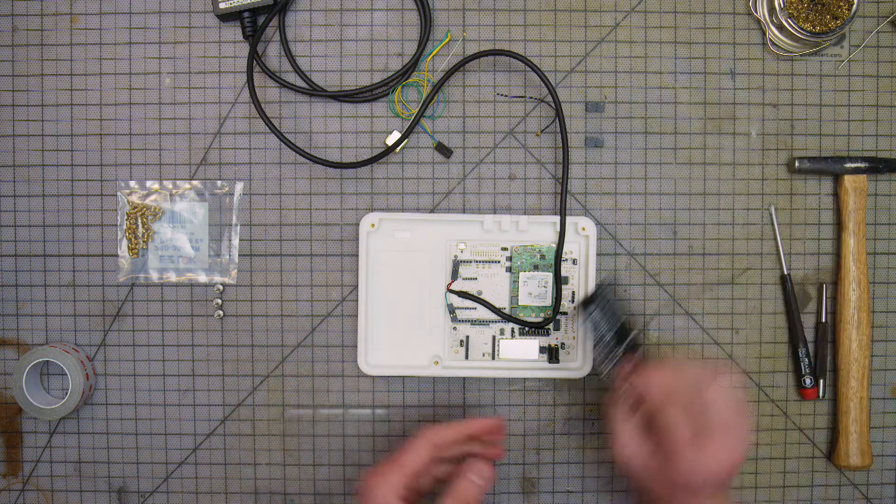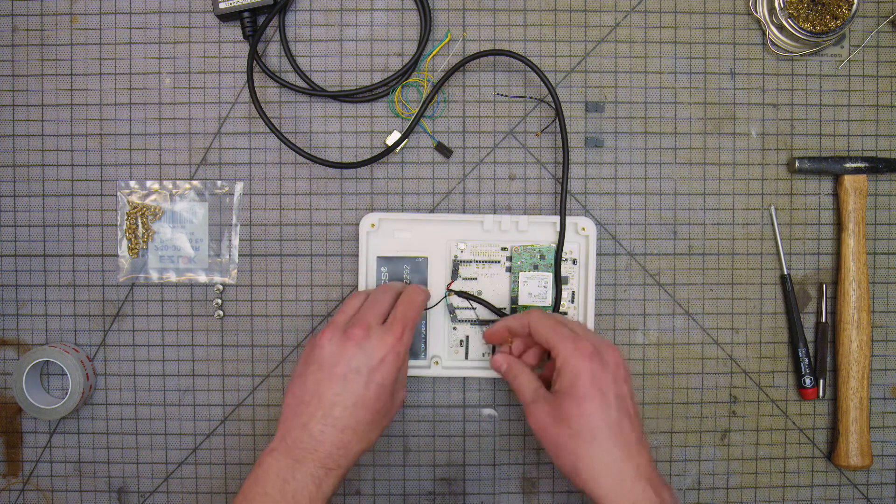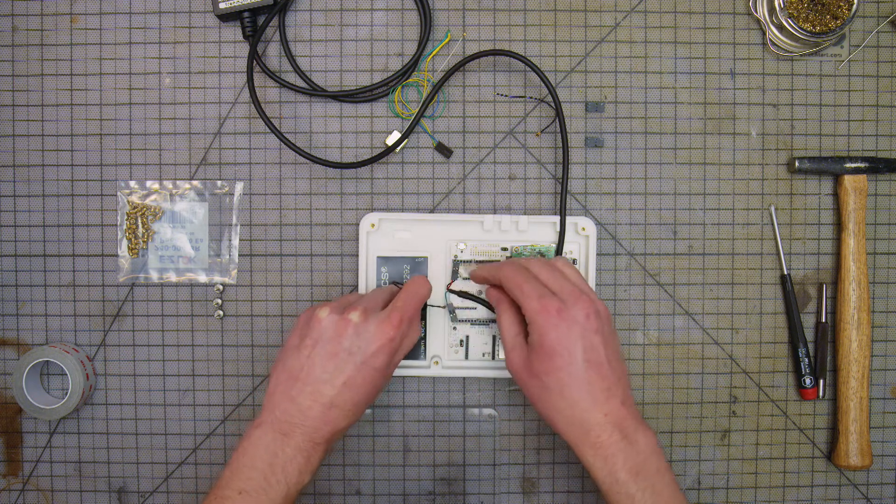Place the GPS antenna, adhesive-backed wireless antenna, and breakout board into the enclosure, as indicated in the instructions. Refer to the diagram and wire and connect the components accordingly.